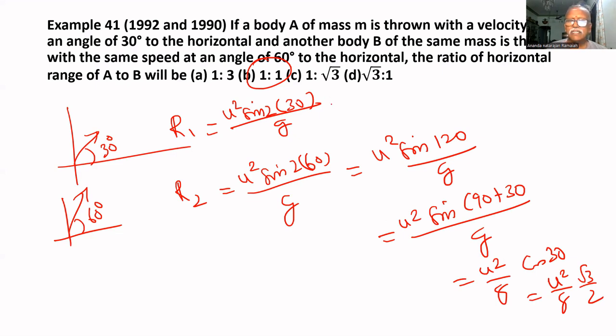Here, this is 60 degrees. U² divided by G sin(60°) also equals U². Same sum, but the question is different. And R1 is √3 by 2.